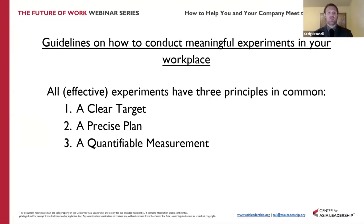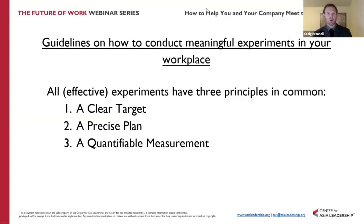The idea of 'I want to increase my employees' motivation' is a goal, but I would argue that's not a clear target. A clear target is 'I want to increase my employees' productivity by 10% within the next three weeks or six months,' or 'I want 95% attendance on Zoom calls.' It is a clear articulation of what the outcome of the experiment should look like.